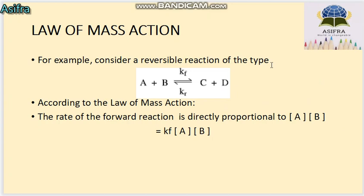For example, consider a reversible reaction: A plus B are the reactants and C plus D are the products. Here Kf means the forward reaction constant and Kr means the reverse reaction constant. According to the Law of Mass Action, the rate of forward reaction is directly proportional to the active masses of reactants A and B, with Kf as the proportionality constant for the forward reaction.